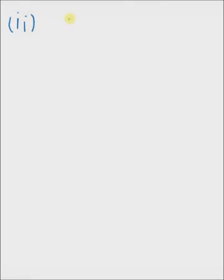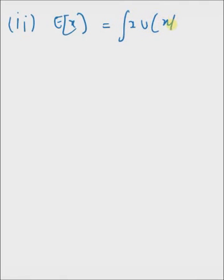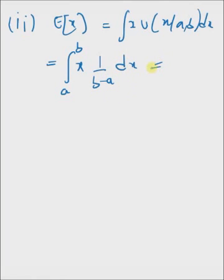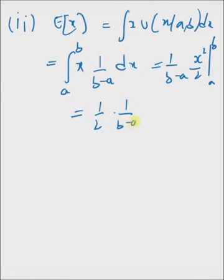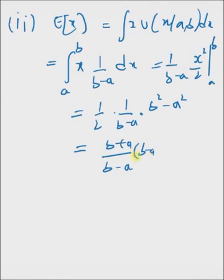The second property is the mean of this distribution, defined by the integral of x times u of x with parameters a comma b. Using the definition, it becomes the integral from a to b of x times 1 by b minus a dx, which equals 1 by b minus a times x squared by 2, evaluated at limits a and b. This equals 1 by 2 times 1 by b minus a times b squared minus a squared, which simplifies to b plus a by 2. Hence, the mean of a uniformly distributed random variable is a plus b by 2.